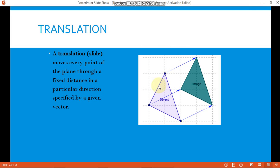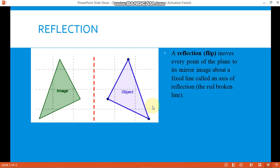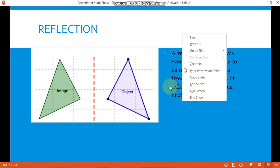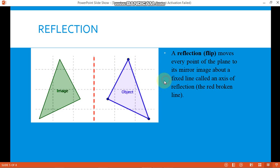Now let's have another one: reflection. A reflection, or flip, moves every point of the plane to its mirror image about a fixed line called the axis of reflection. That is the broken line here. We can see that the object is being reflected to the other side. We can see this one in the mirror, it's like that.